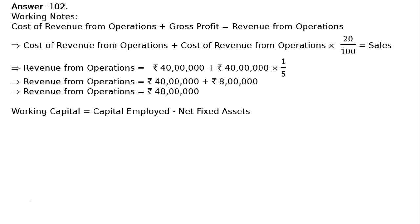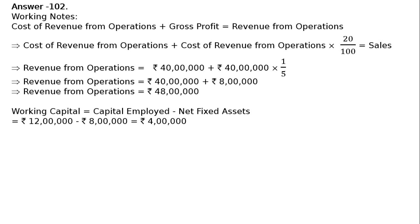Working capital is equal to capital employed minus net fixed assets. That is Rs. 12,00,000 minus Rs. 8,00,000, which equals Rs. 4,00,000 as the working capital.